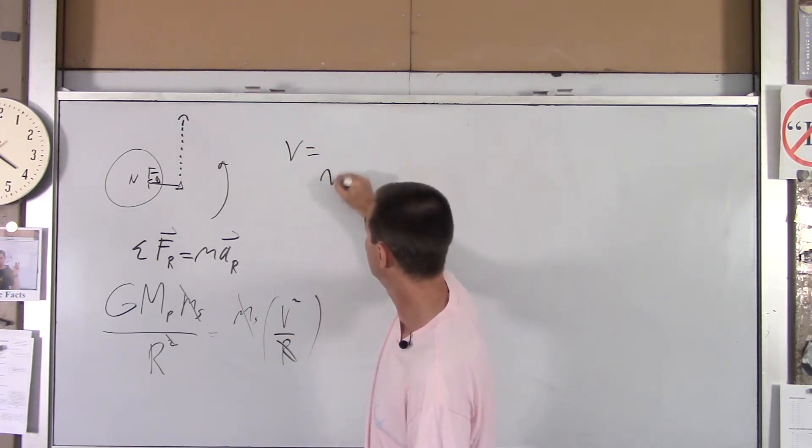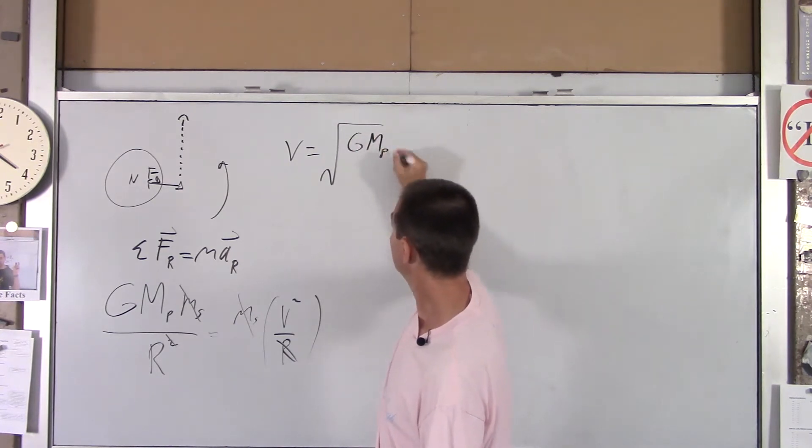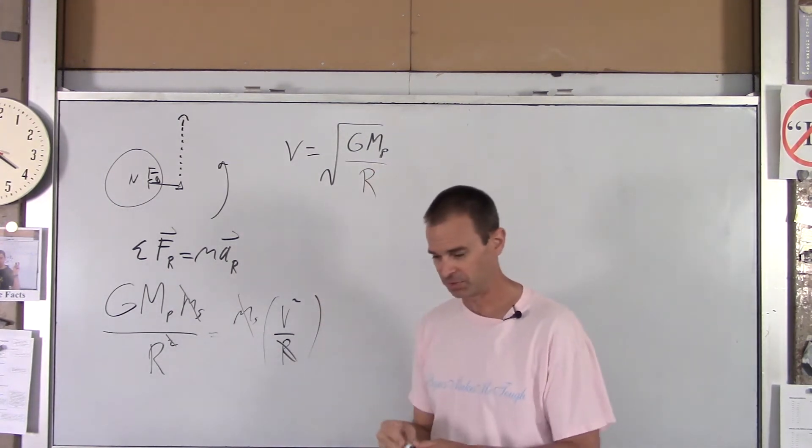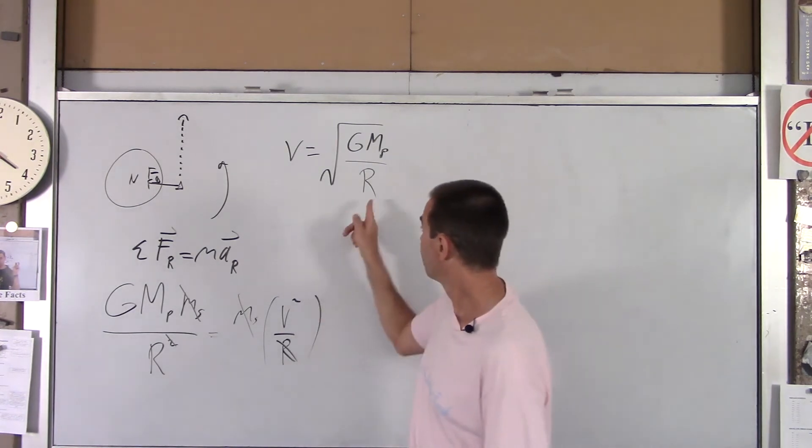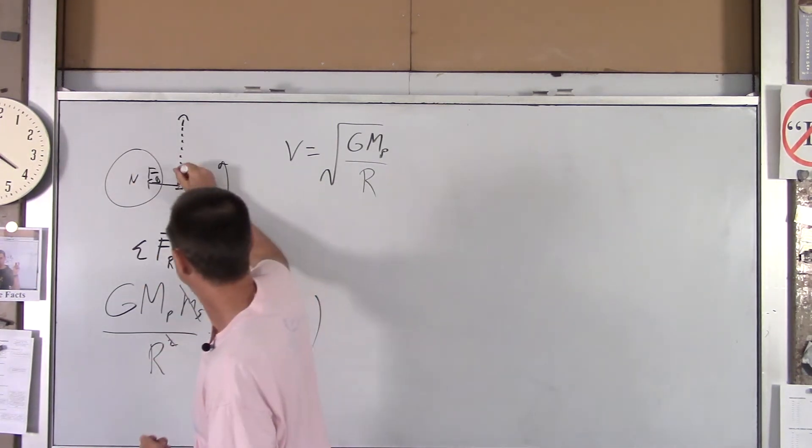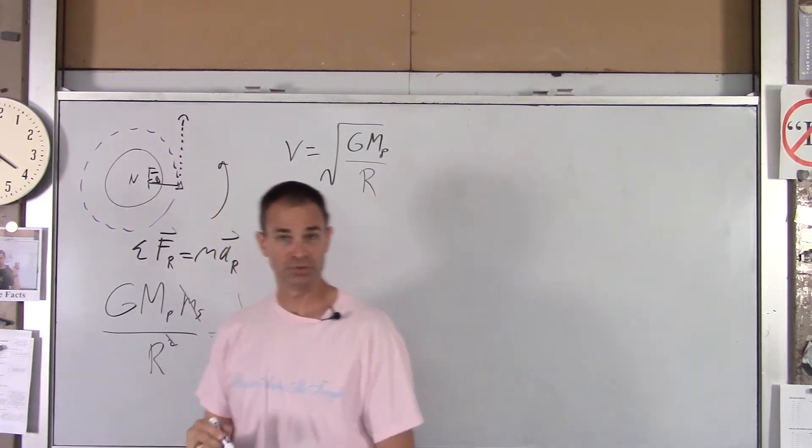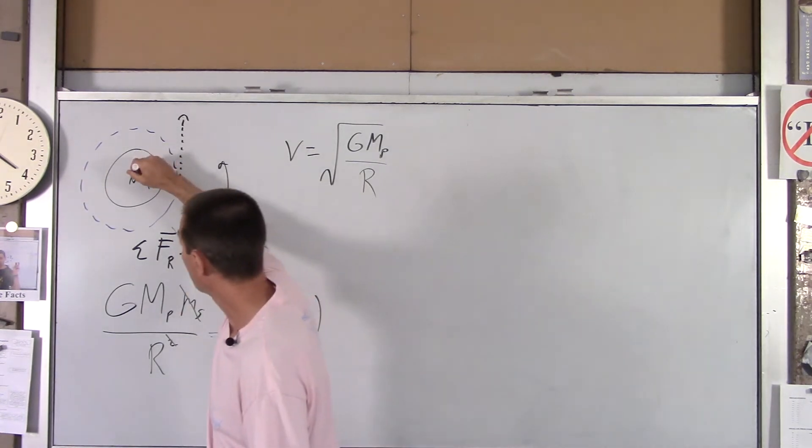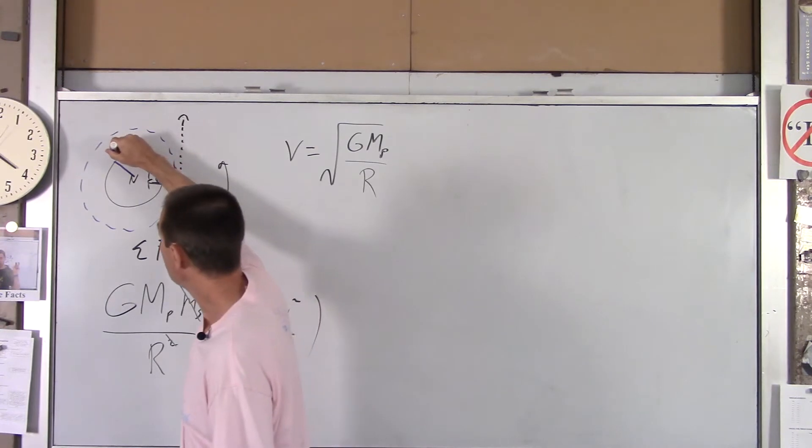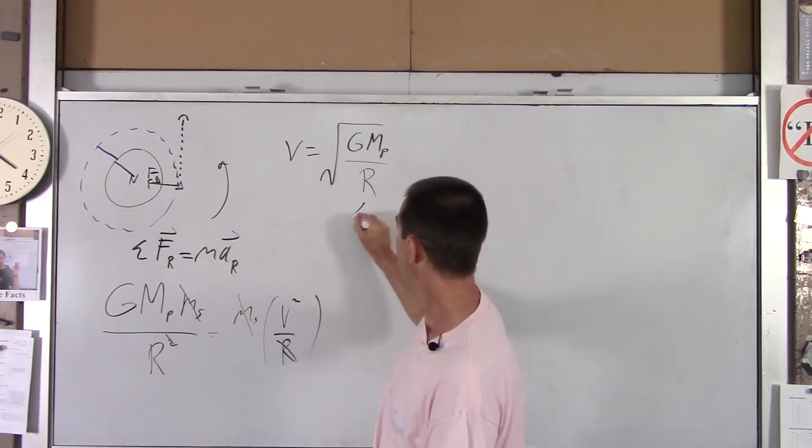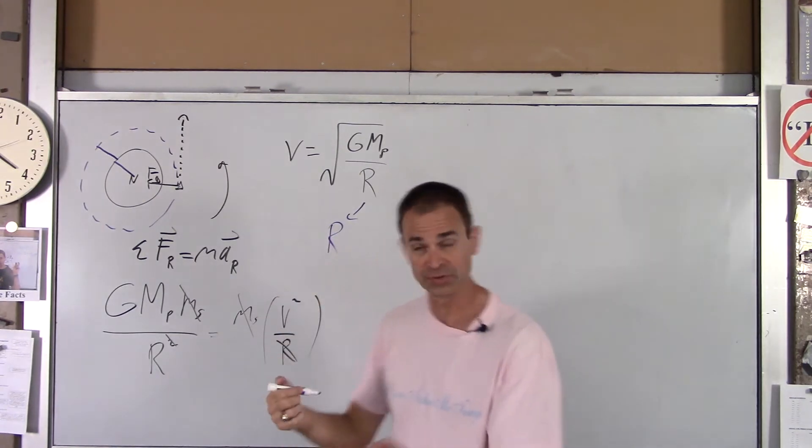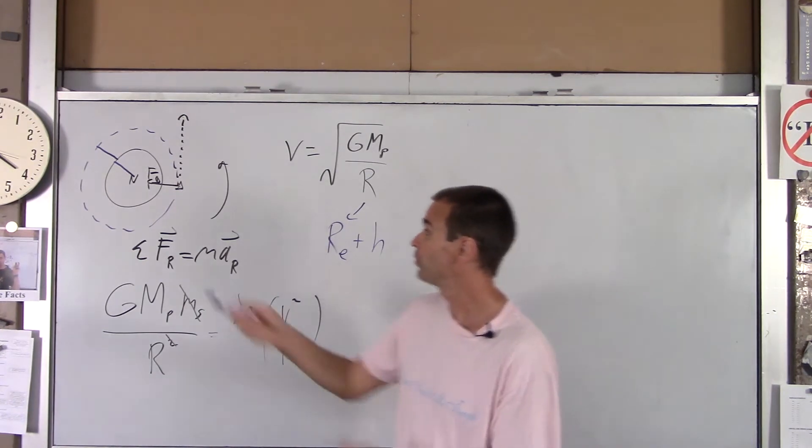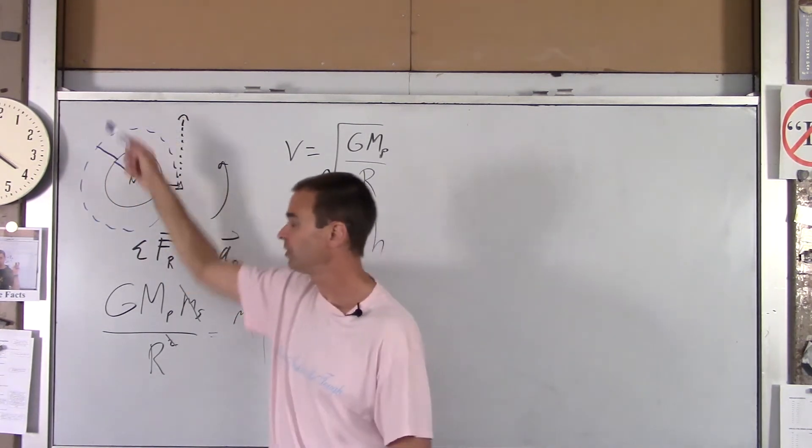If you square root both sides, you get v orbit is square root g mass of the planet, or the mass of whatever you're orbiting, divided by r. Now, you've got to be careful with r. This is a common mistake that people make. r is the radius of the circle that the ship is making. Well, how would you figure out the radius of that circle? You'd have to add the radius of the planet plus the height above the planet that you are. This would be the radius of the Earth plus the height above the Earth's surface. That would then be the radius of the circle that the ship makes around the planet.